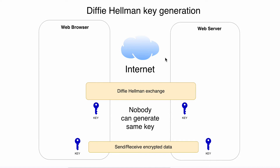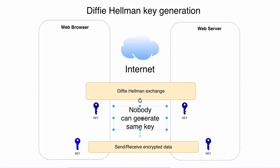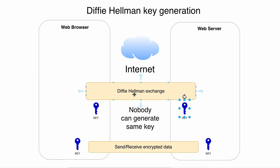The Diffie-Hellman key exchange algorithm allows both sides to generate the same key, but in such a way that nobody else can generate that same key. There is a sequence of packets sent between the two sides during this phase, but the key itself is never sent.